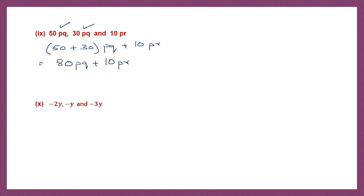Next question: minus 2y, minus y, minus y, and minus 3y. They're all like terms. Here let me write 1, so that is minus 1y. Let's take only the numbers: minus 2, minus 1, minus 3y. Now remember your integers — these are all minus signs. When signs are the same, put the same sign and add. So minus: 2 plus 1 is 3, 3 plus 3 is 6. So it is minus 6y. That's my answer.